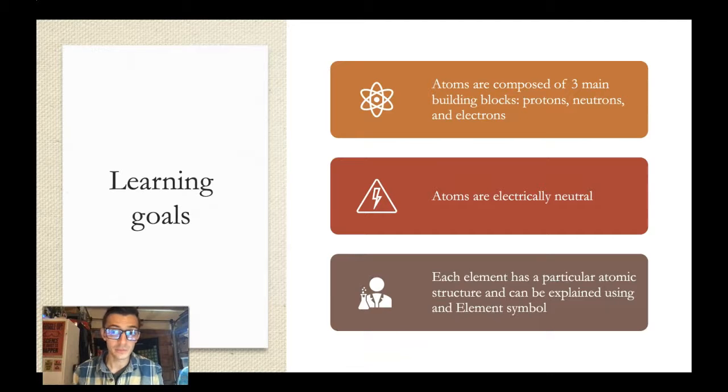One, what atoms are composed of and that they're composed of three main building blocks. That's protons, neutrons, and electrons. We'll also learn that atoms are electrically neutral. Once we'll learn about the different components, we'll learn what that means. And then also that each element has a particular atomic structure that can be explained by using an elemental symbol. So we can learn about the element by looking at its symbol.